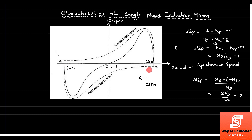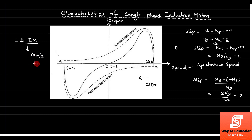Now let's understand the nature of the graph. In the single phase induction motor case, when we supply single phase, we generate two components: one has magnitude Fm by 2 in the forward direction and another magnitude minus Fm by 2 in the backward direction. In short, there are two types of torque produced — one forward field torque and one backward field torque. I have discussed this in the previous lecture.